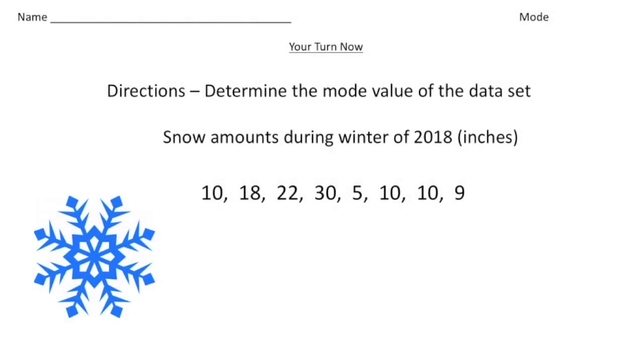All right, welcome back. Let's do this practice problem. In this problem you had to determine the mode value of the data set. We're talking about snowstorms, the number of inches per storm. So we had a storm that had 10 inches, 18, 22, 30, 5, 10, 10, and 9. And again, the mode is the one that occurs the most, so it's pretty obvious that this year there was more 10 inch storms than any other amount during the season. So our mode was 10. How'd you do?